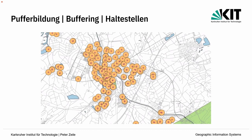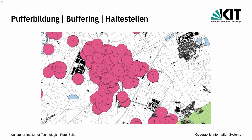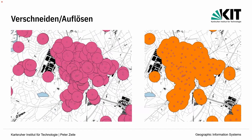So viele Leute sind ans öffentliche Nahverkehrssystem angeschlossen – im Stadtgebiet von Rastatt sieht es dann auch sehr gut aus. Man kann diese Puffer auch durch räumliche Verschneidungsoperationen weiterverarbeiten: Schneiden, Schnittmenge, Vereinigen, Auflösen – also verschiedene Operationen, um aus vielen kleinen Geometrien eine große Geometrie zu machen und so räumliche Abfragen zu stellen. Man kann auch über Attribute auf verschiedene Flächen selektieren, zum Beispiel Wohngebiete oder Gewerbegebiete aus OpenStreetMap-Daten.